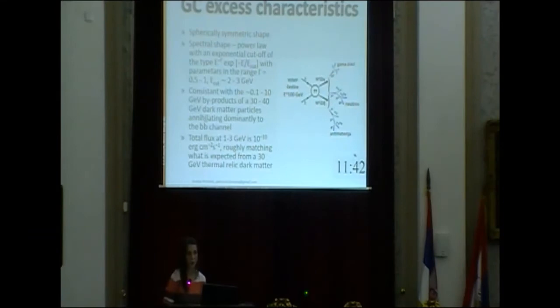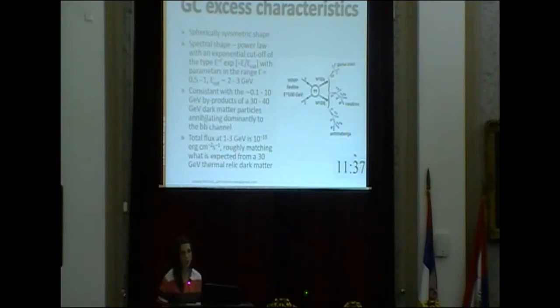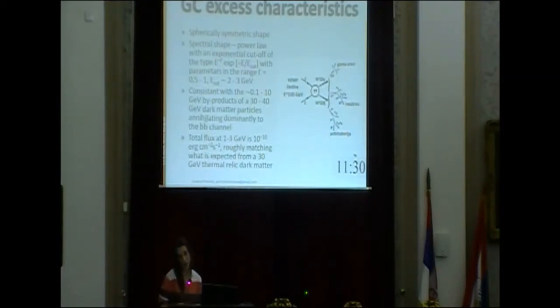What is so special about this spectral shape is that it is actually consistent with what we expect to see if we have dark matter annihilating in the center of our galaxy, creating by-products through standard model particles. We expect to see such a shape from 30 to 40 GeV dark matter particles that annihilate mostly through the b b-bar channel.